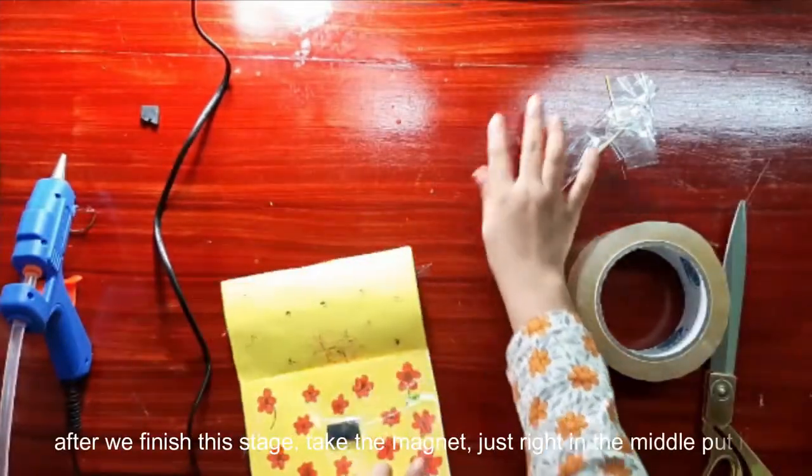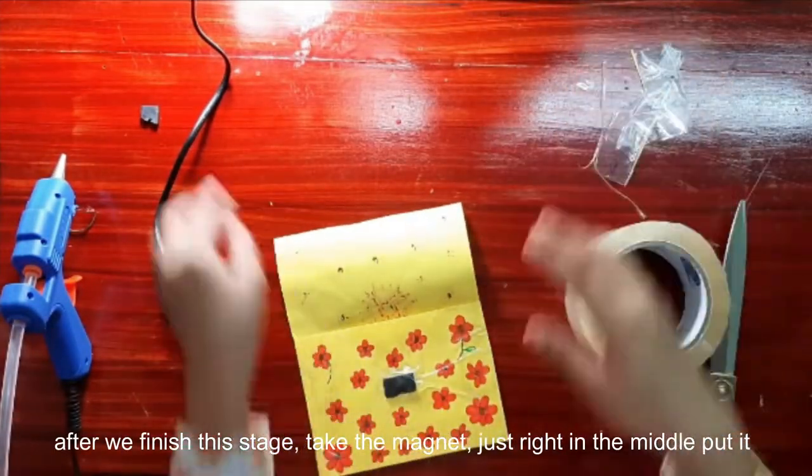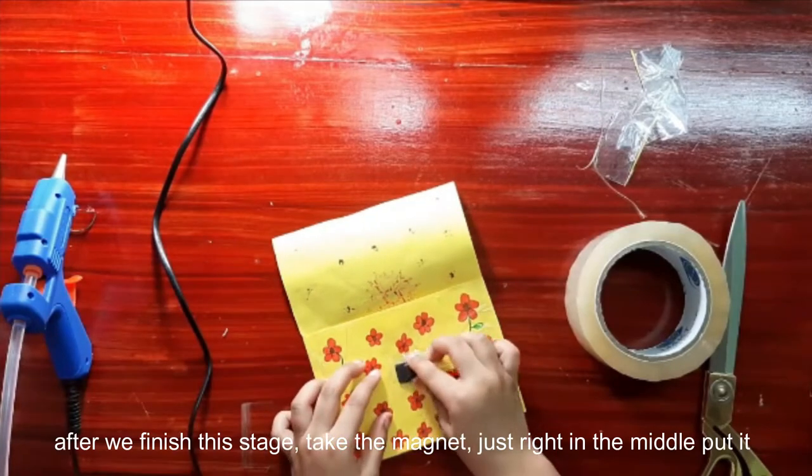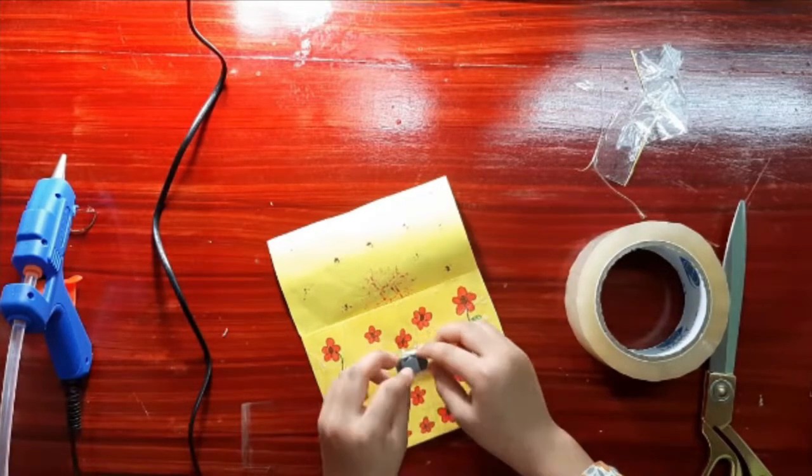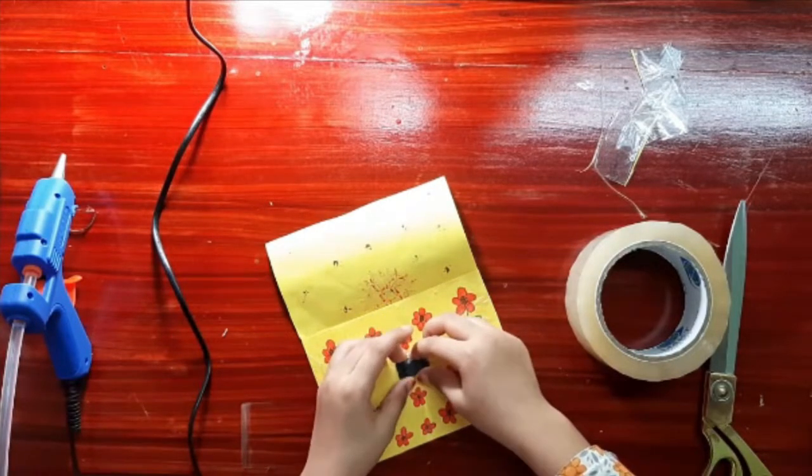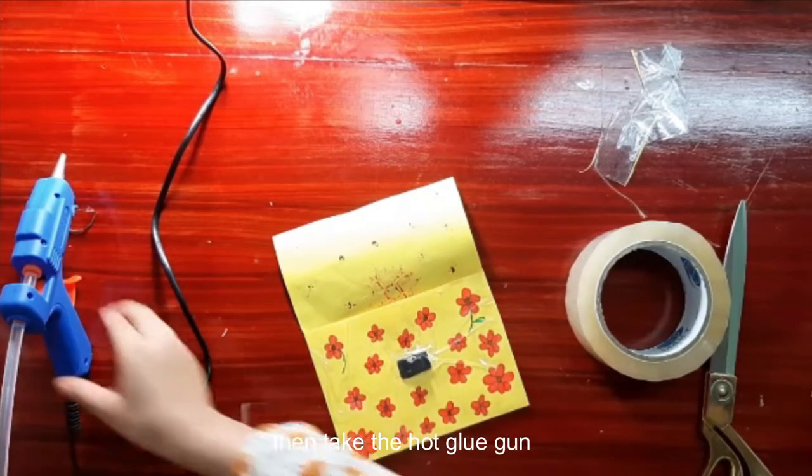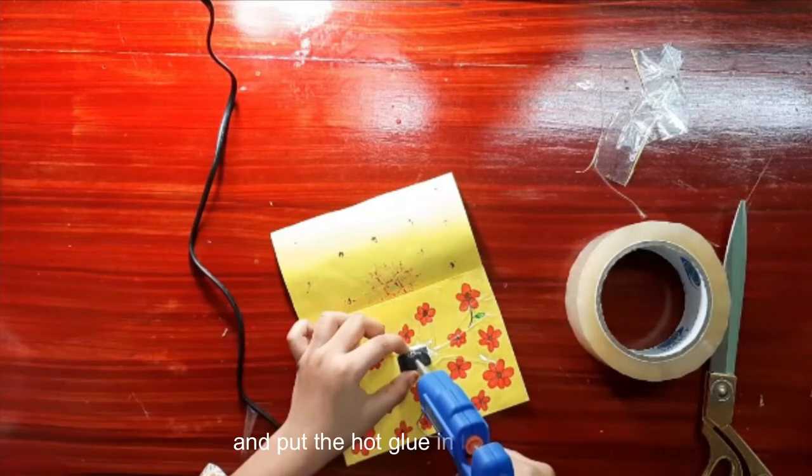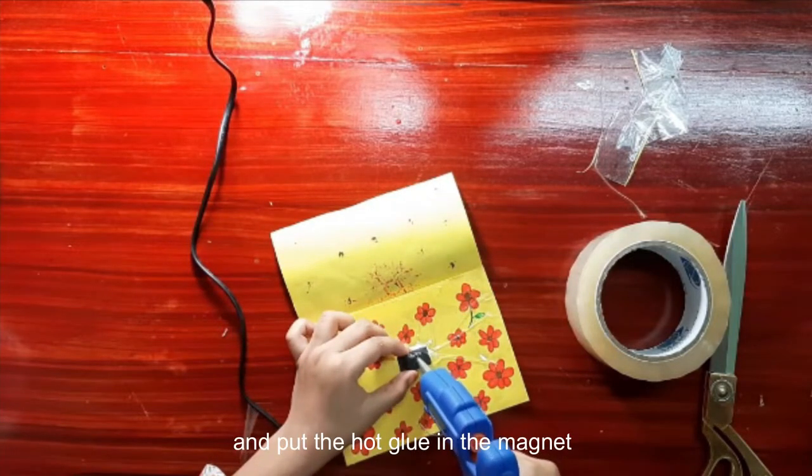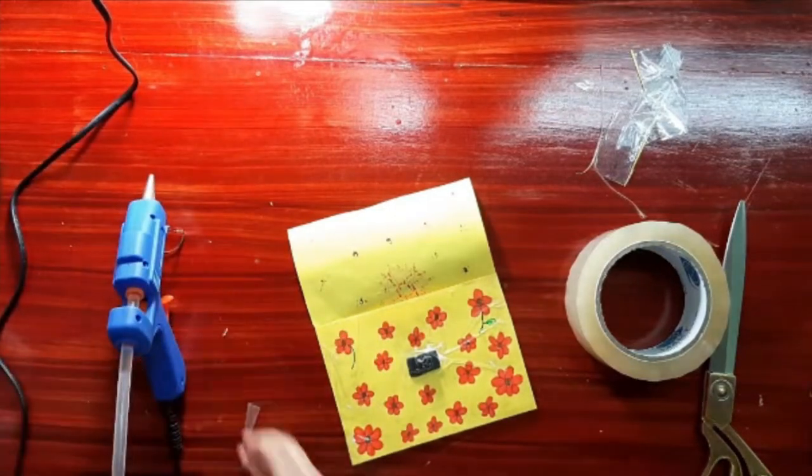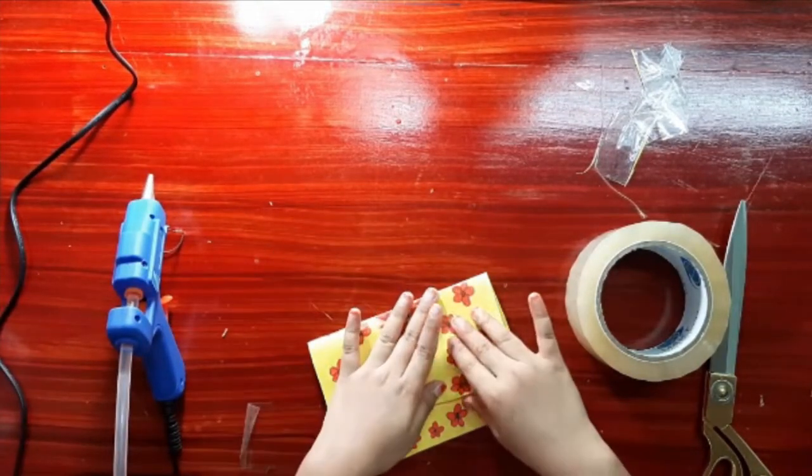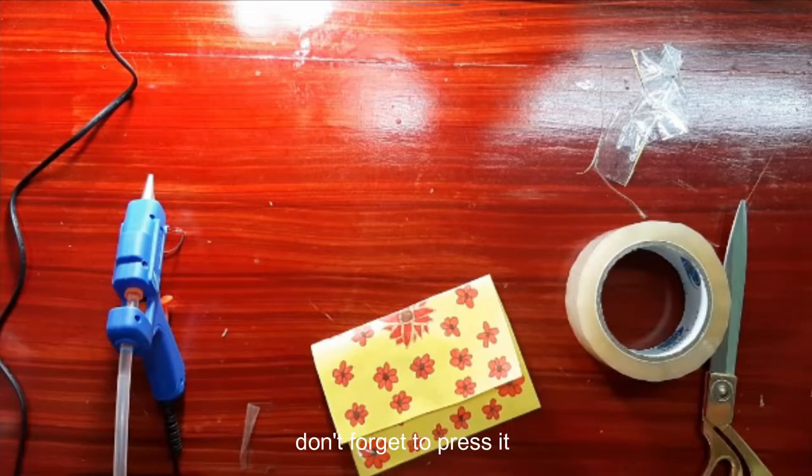After we finish this stage, take the magnet, just right in the middle and put it. Then take the hot glue gun and put the hot glue on the magnet. Don't forget to press it.